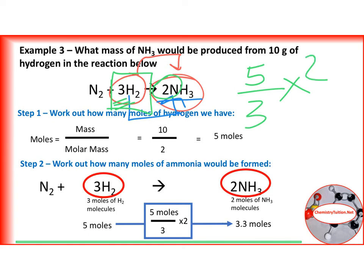And if you do that, for all the examples, it will work out. And so for our example, we have got 5 moles. We divide by 3 times by 2. And that means we're going to produce 3.3 moles of ammonia.